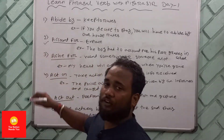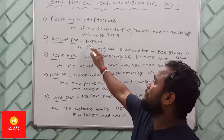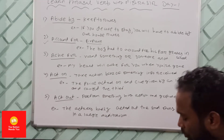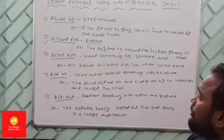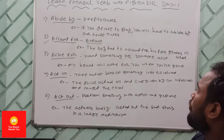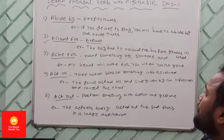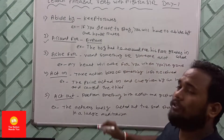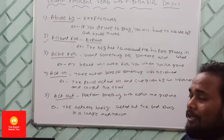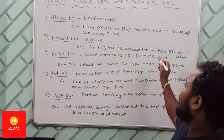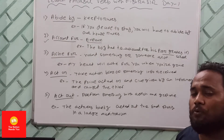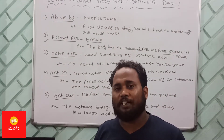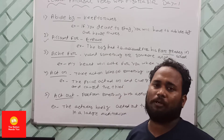Number two: 'account for,' which means to explain something. For example: The boy had to account for his poor grades in school. This phrasal verb is used when someone has to give an explanation for something.